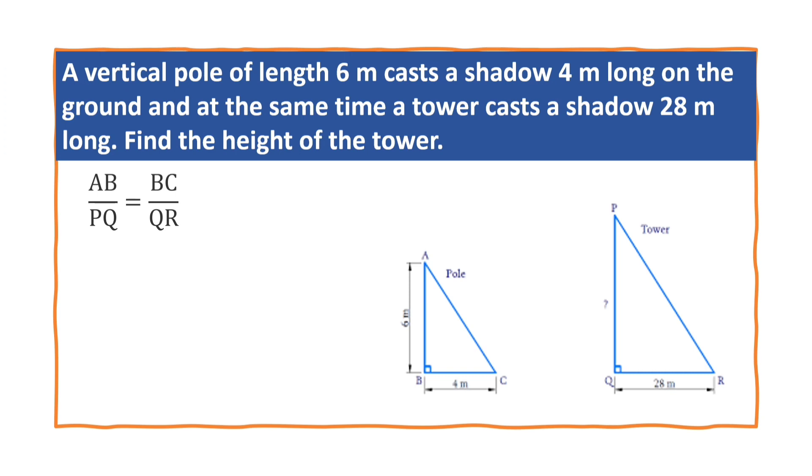Now let us substitute the values of AB. What is the value of AB? Height of the pole, this is 6m. PQ we have to find, means height of the tower.